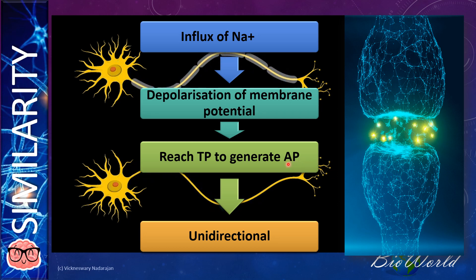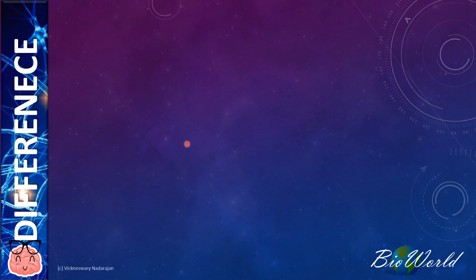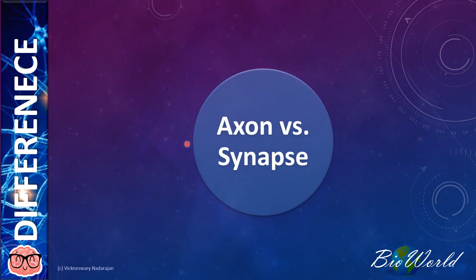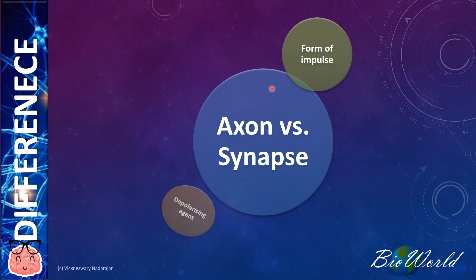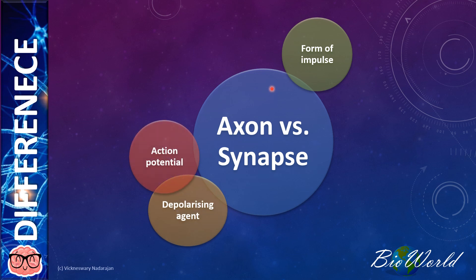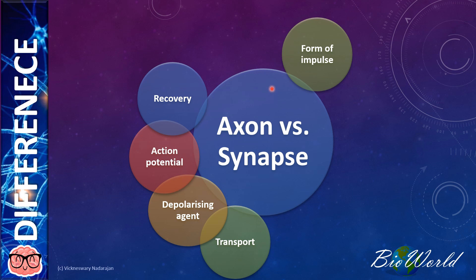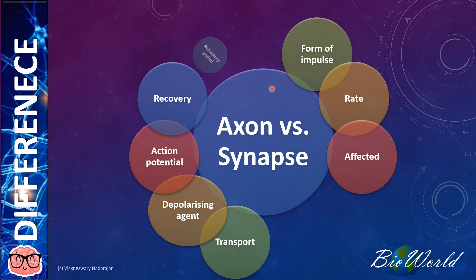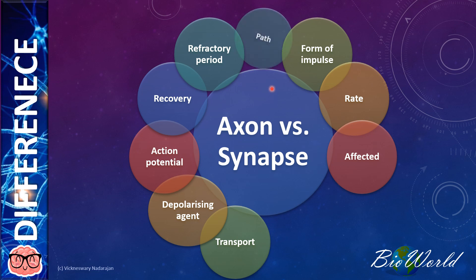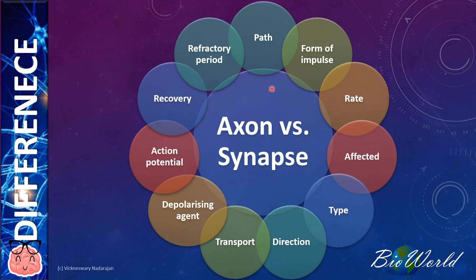Let me now move on to the differences. Now let's have a look at the differences between the transmission of impulse along the axon and across the synapse. Here is a list which will include factors such as the type of impulse, the depolarizing agents, the nature of the action potential, types of transport involved, the recovery of the axon and the synapse, the rate of transmission, how the axon or the synapse can be affected, the refractory periods involved, the path taken by the impulse, the reasons for it being unidirectional, and finally the types of transmission.